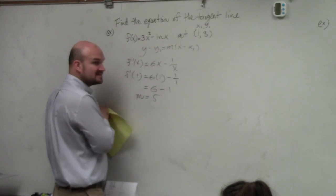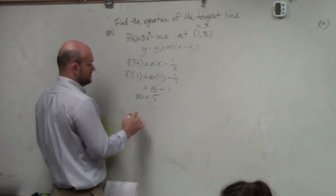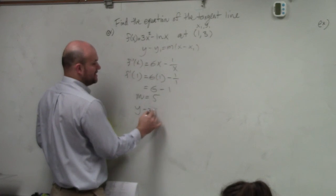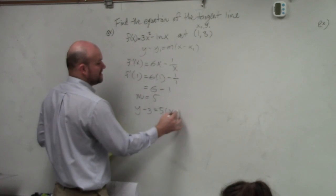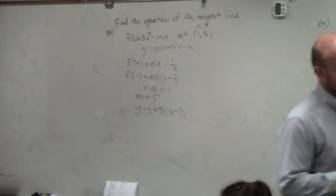So therefore, I can say that the slope is equal to 5. So my equation is y minus 3 equals 5 times x minus 1. Done. That's it.